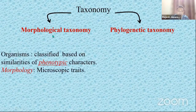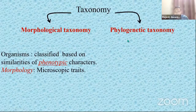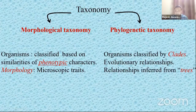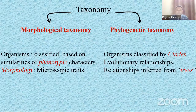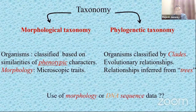When we talk about morphological taxonomy, we try to classify those fungi based on the similarities of phenotypic characters — those morphs that they have. However, when we talk about phylogenetic taxonomy, we try to classify those organisms by clades in a particular phylogenetic tree. From that tree, we try to infer evolutionary relationships — that is, how each organism is related to one another. This is the trend we are taking in modern fungal research.